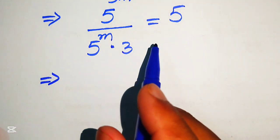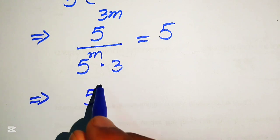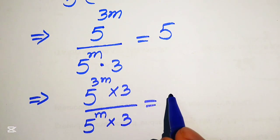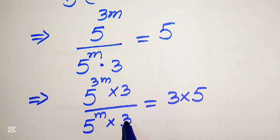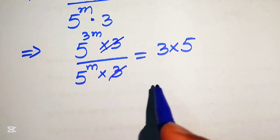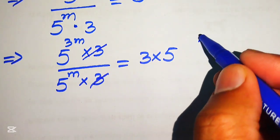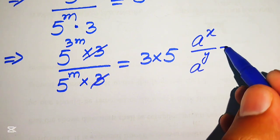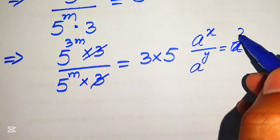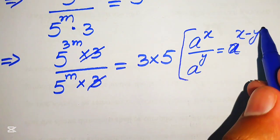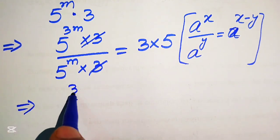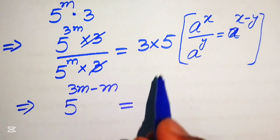In the next step we multiply both sides by 3, giving 5 to the power of 3m multiplied by 3, divided by 5 to the power of m multiplied by 3, equals 3 multiplied by 5. The 3s cancel each other out, and we apply the exponent law: a to the power of x divided by a to the power of y, where the bases are the same, equals a to the power of x minus y. So 5 to the power of 3m minus m equals 15.